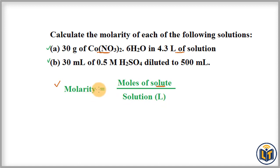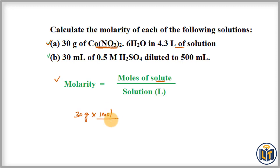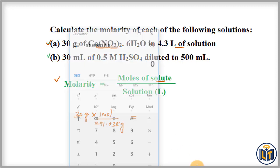To calculate molarity, we first need to convert the mass of the solute into moles. We have 30 grams of cobalt nitrate with six moles of water. Using the periodic table, the molar mass of this compound is 291.035 grams per mole, meaning one mole has 291.035 grams.